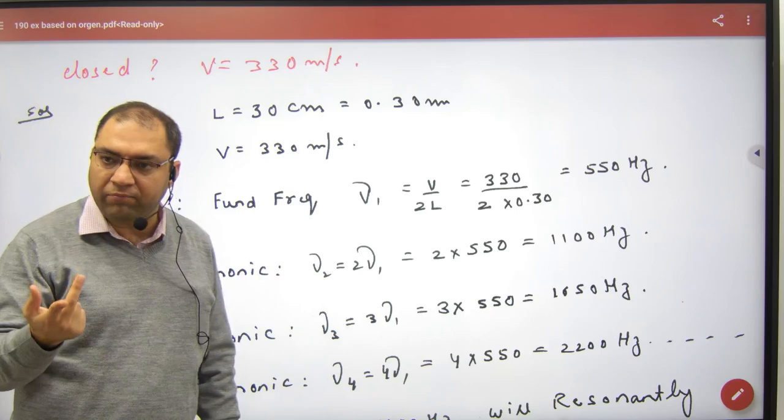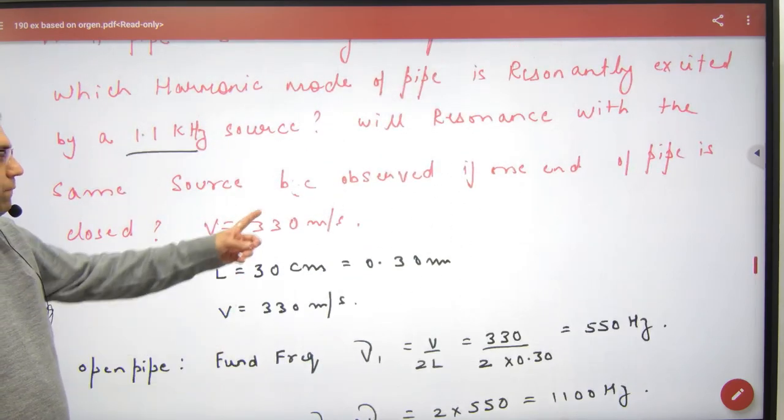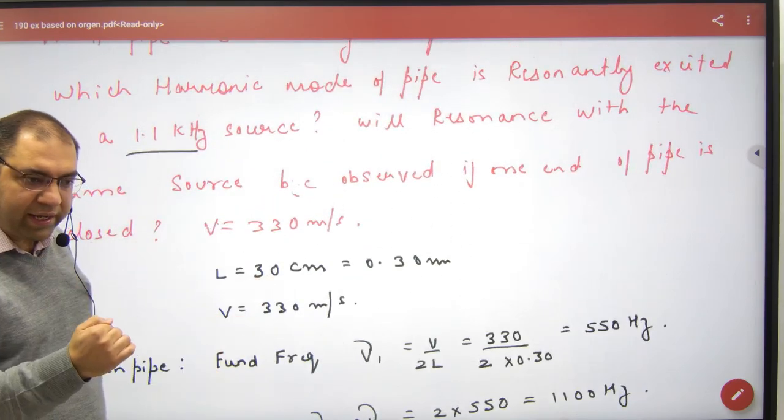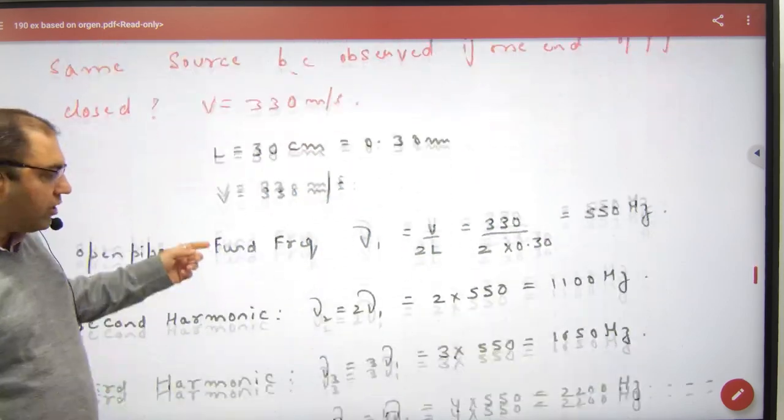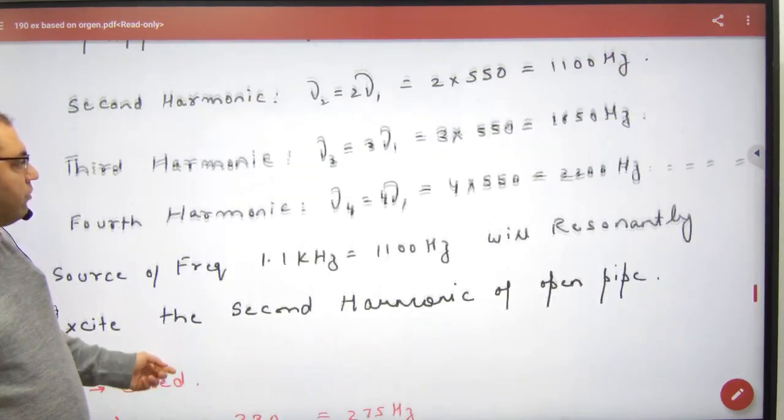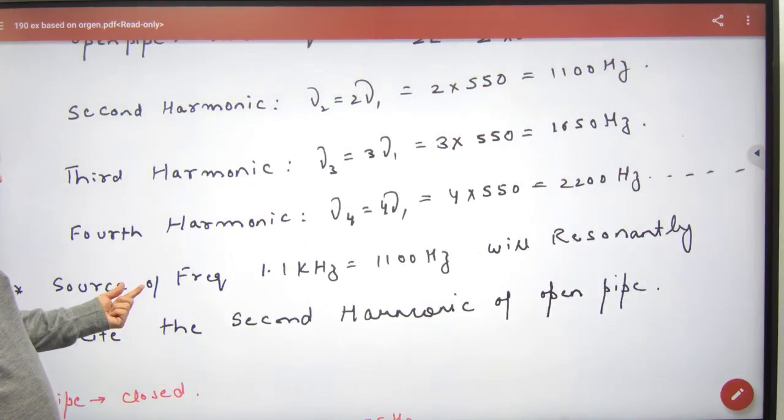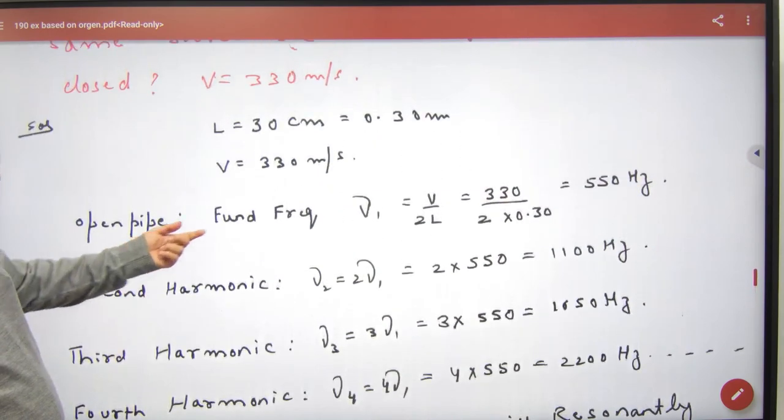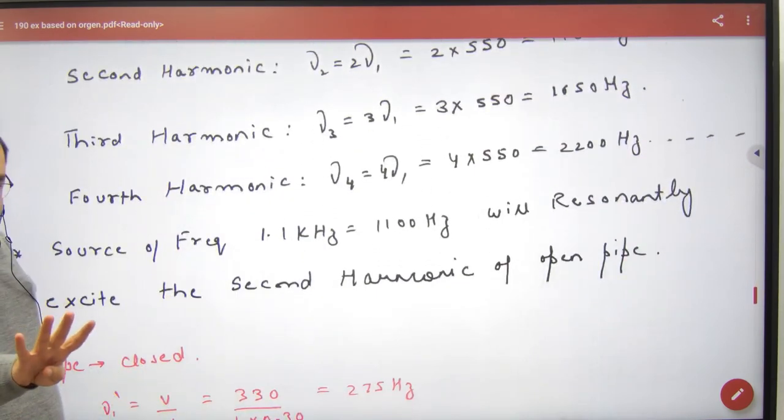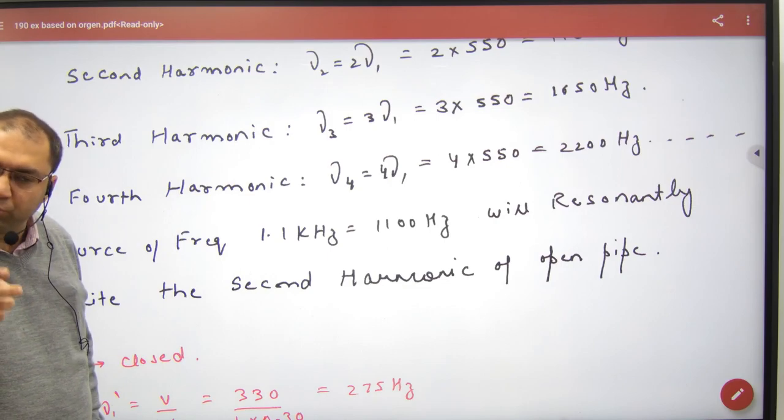Now repeat the question when pipe closed one end. In that case formula will change. What will happen? V by 2L becomes v by 4L. You will have to do first frequency, then another.